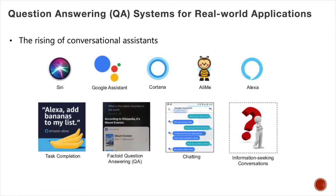Nowadays, we are witnessing the rising of conversational assistants for many real-world applications. For example, we have Apple Siri, Google Assistant, Microsoft Contender, and Amazon Let's Card. In Alibaba, we also have Alimi Assistant for taking care of customer questions.